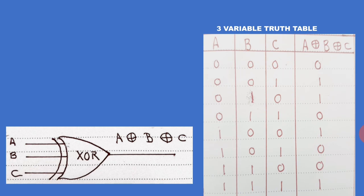One-zero-zero has a single one so output is one. One-zero-one has two ones — even — so output is zero. One-one-zero has two ones — even — so output is zero. The last row one-one-one has three ones — odd — so the output is one.